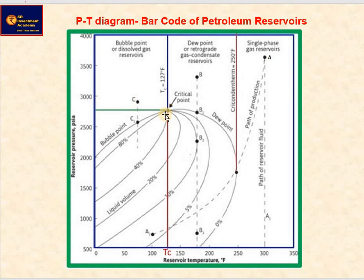The critical point for a multi-component mixture is a state of pressure and temperature at which all intensive properties of the gas and liquid phases are equal. At the critical point, the corresponding pressure and temperature are called critical pressure and critical temperature of the mixture. Depending on the initial composition of the reservoir fluid, each hydrocarbon accumulation has its own phase diagram.